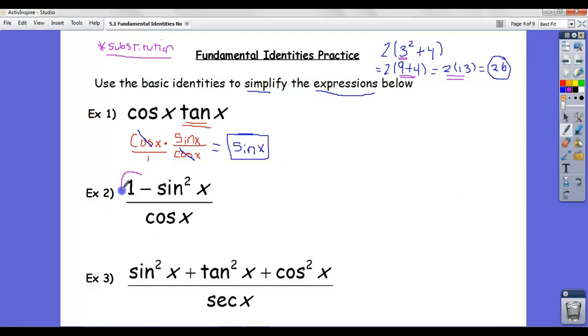So I can substitute in a cosine squared for whenever I see a 1 minus sine squared. So this reduces to cosine squared of x. And again, remember cosine squared of x means, remember that just means cosine of x. I know the notation is a little confusing, but it means cosine of x times cosine of x. That's what that means. And I'm dividing by cosine of x. And as before, cosine of x divided by cosine of x is a 1. And so my answer is cosine of x.